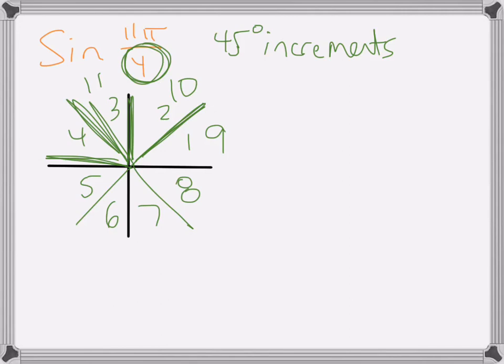So I don't have to do the conversion. If I just count the pieces, 1, 2, 3, 4, 5, 6, 7, 8, 9, 10, 11, my angle is going to end up right here. So that's where it's going to stop. See how easy that was? I didn't do the conversions, I just count the pieces.